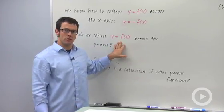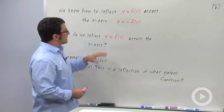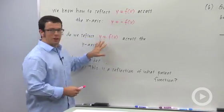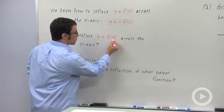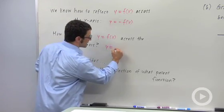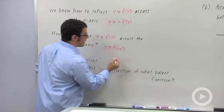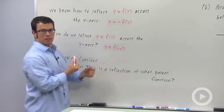But how do you reflect it across the y-axis? Well, instead of flipping the y values, you want to flip the x values. So you replace the x with minus x. And that will reflect your graph across the y-axis.